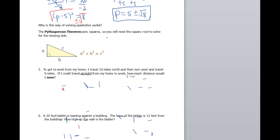So my question is, why would you want to solve quadratics this way? Well, the good old Pythagorean theorem. You are gonna need square roots to solve for the missing side.